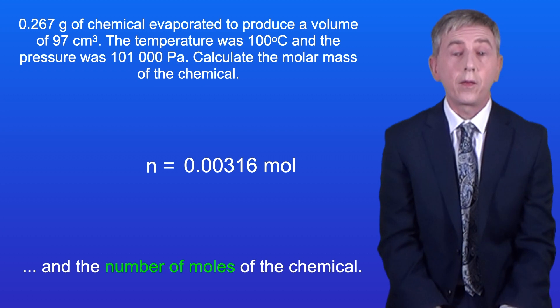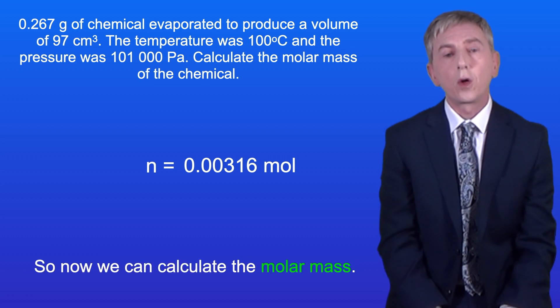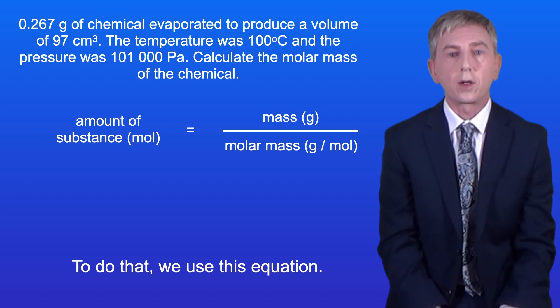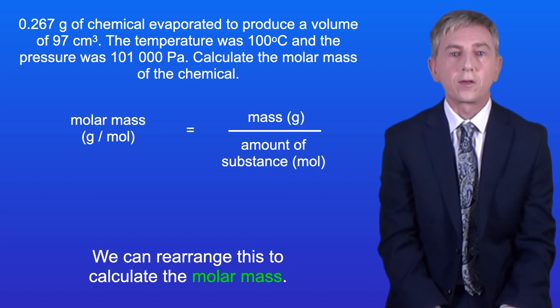Now we know the mass of the chemical and the number of moles of the chemical. So now we can calculate the molar mass. To do that we use this equation. The amount of substance in moles equals the mass in grams divided by the molar mass in grams per mole. We can rearrange this to calculate the molar mass. The molar mass equals the mass in grams divided by the amount of substance in moles.